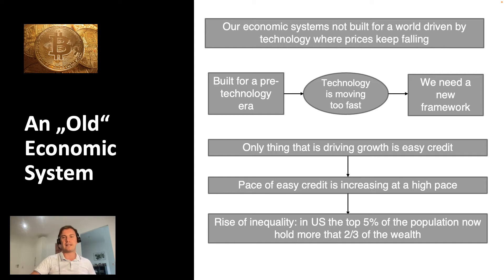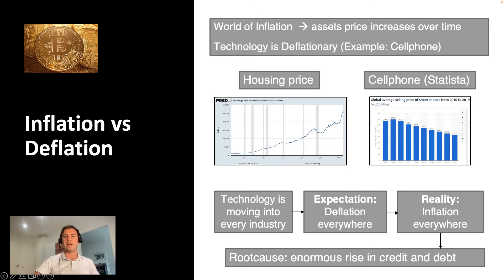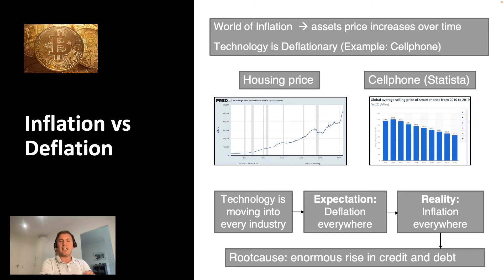Technology is moving too fast and will only move faster. We need to build a new framework for our local and global economies. Today we live in a world with inflation where asset prices increase over time. Housing is a classic example: a house that cost around $30,000 in 1969 cost around $380,000 in 2020.